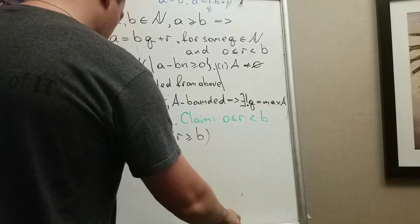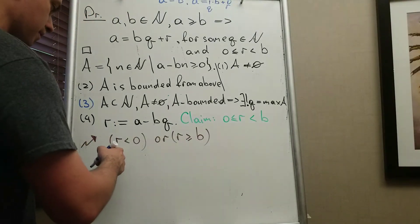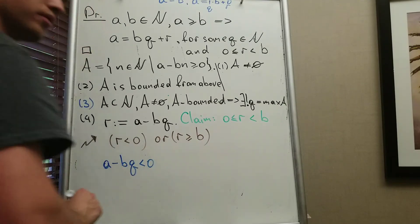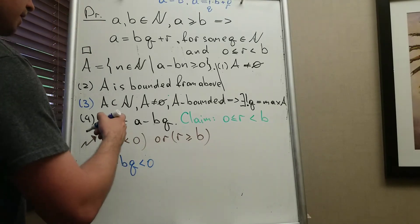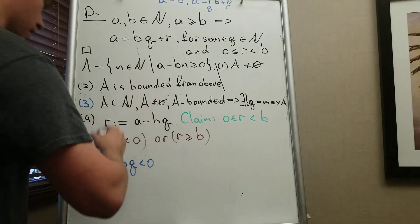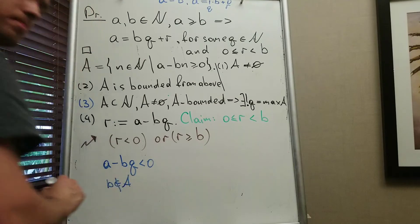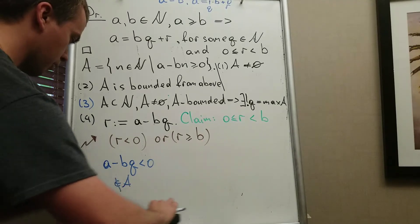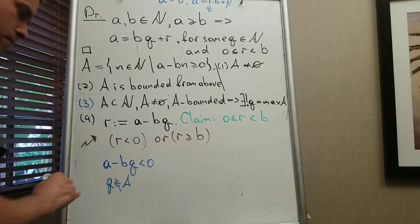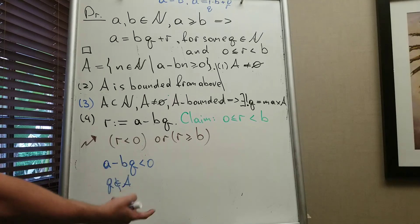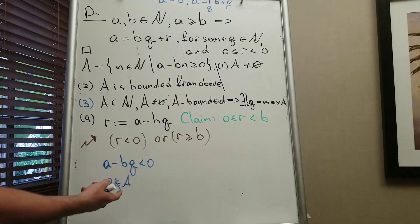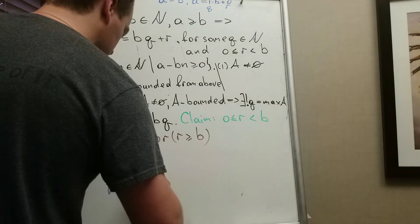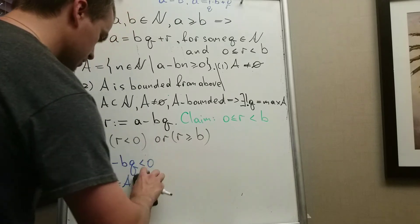For the first case, suppose R < 0. Then A − BQ < 0, which means Q does not belong to A — it doesn't satisfy the defining condition A − Bn ≥ 0. But Q was chosen as the maximum element of A, and a maximum element must lie in the set. This is a contradiction, so R < 0 is not possible.